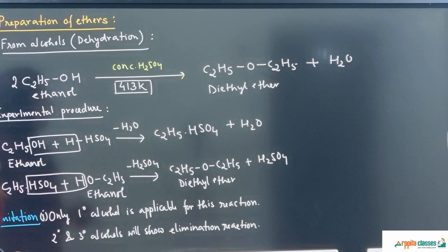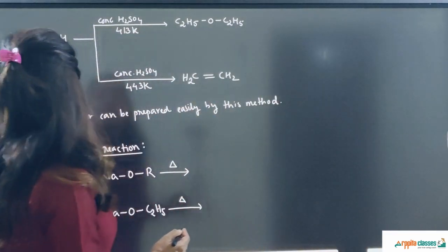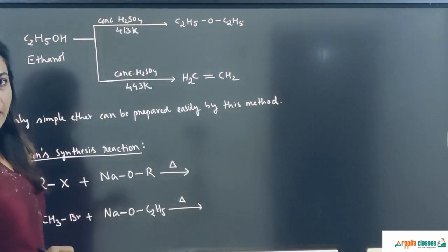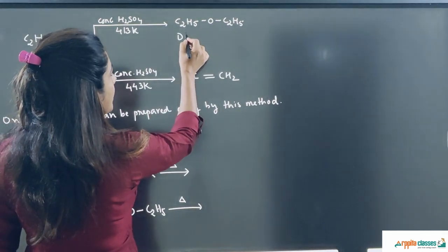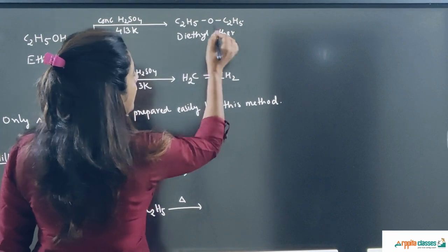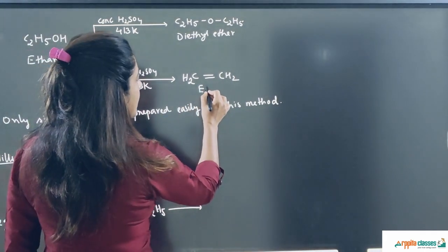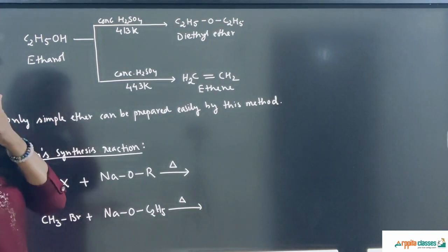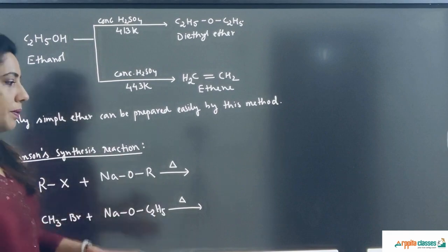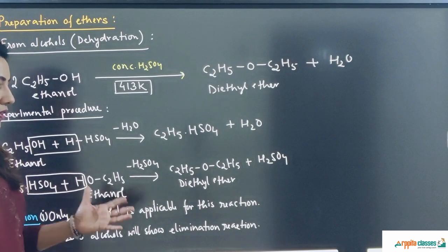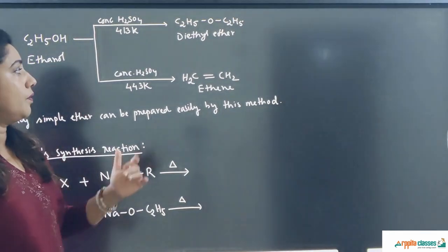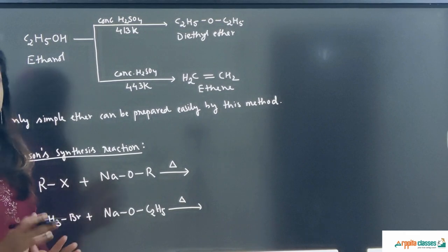There are three limitations of this dehydration method. First, only primary (1°) alcohols are applicable — secondary and tertiary alcohols show elimination reaction instead. Second, the temperature must be maintained at 413 K; if it rises to 443 K, alkene is formed instead of ether. Third, only simple (symmetrical) ethers can be produced by this method.